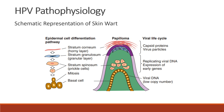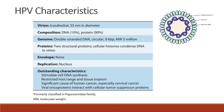This is a schematic representation of a skin wart in a person infected with human papillomavirus. We can observe the epidermal cell differentiation pathway from outermost to inner: the stratum corneum (horny layer), followed by the stratum granulosum (granular layer), followed by the stratum spinosum containing prickle cells, and in the innermost part the basal cell layer with rapid mitosis. This also corresponds to the viral life cycle: the outermost part contains capsid proteins and virus particles, the middle contains replicating viral DNA and early gene expression, and the innermost part contains viral DNA at low copy number.